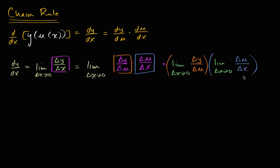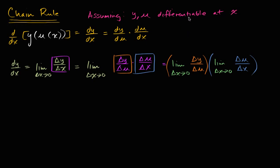So what does this simplify to? Well, this right over here is the definition — and we're assuming, in order for this to even be true, that u and y are differentiable at x. And remember, if they're differentiable at x, that means they're continuous at x. If u is differentiable at x, then this limit exists, and this is u prime of x, or du/dx. So this right over here we can rewrite as du/dx.